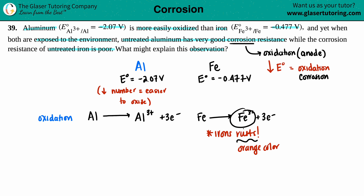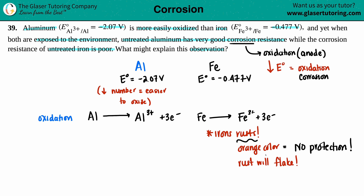That orange rust — iron turning into Fe³⁺ and forming iron oxide — is not protective. There is no protection when iron turns into rust. What happens is that the rust will flake off, exposing more iron underneath, which then rusts some more. The process just keeps going continuously. That's why the corrosion resistance of untreated iron is poor — rust flakes, and the cycle never stops.